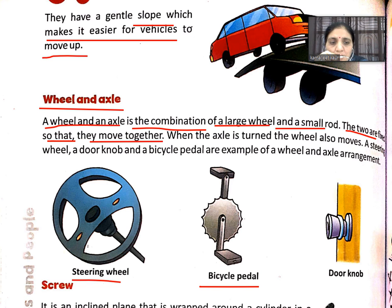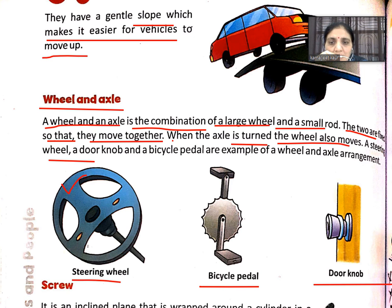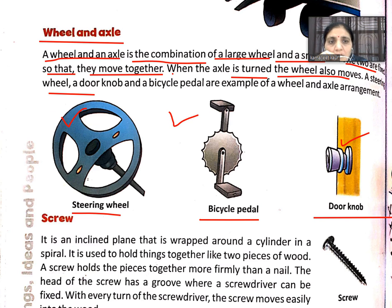Door knob — these are all examples of wheel and axle. When the axle is turned, the wheel also moves. A door knob and bicycle pedal are examples of wheel and axle arrangement.